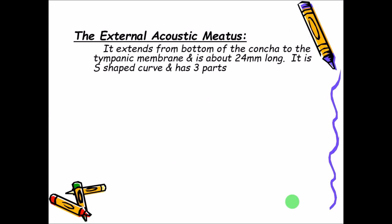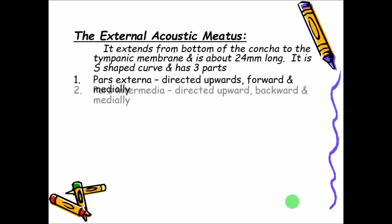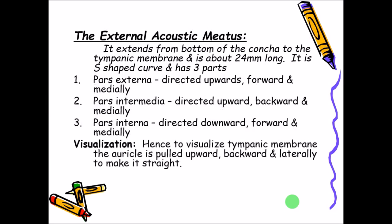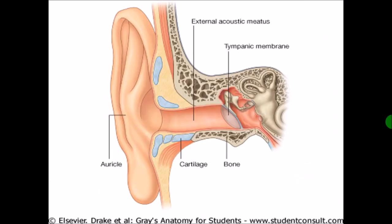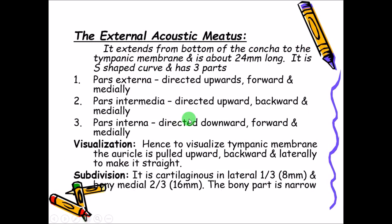The external acoustic meatus extends from the bottom of the concha to the tympanic membrane. It is almost 2.4 centimeters or 24 millimeters and is S-shaped, not straight. It has three parts: the pars externa, the outermost and outer external one-third; the pars intermedia, the middle one-third; and the pars interna, the innermost part.